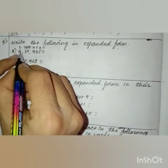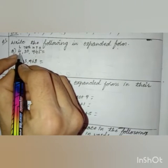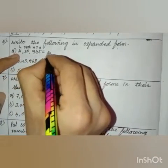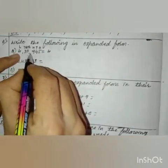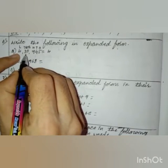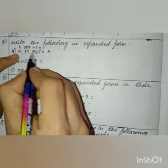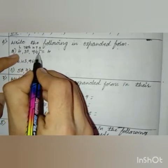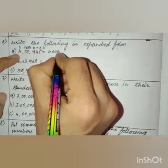4 is in the lakhs place, so 4 into lakh is 4 lakh. The easy method: write 4, then count how many digits come after it — there are 5 digits after 4, so add 5 zeros to get 4,00,000. Next comes 3 in the ten-thousands place. Write 3, count the digits after it — there are 4, so add 4 zeros to get 30,000.